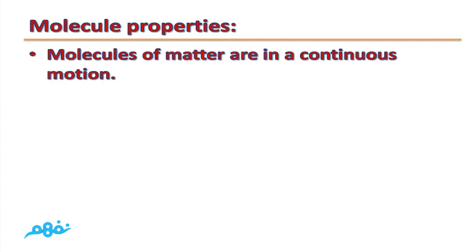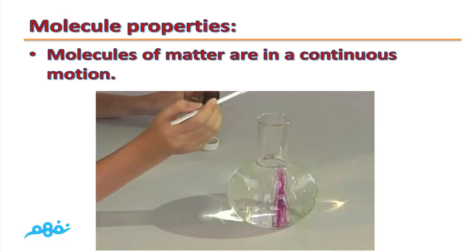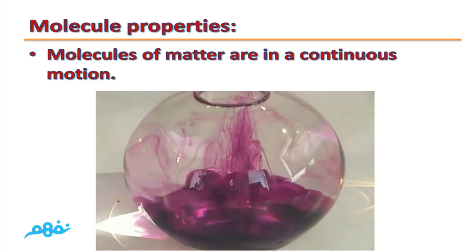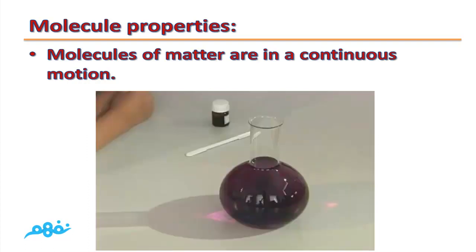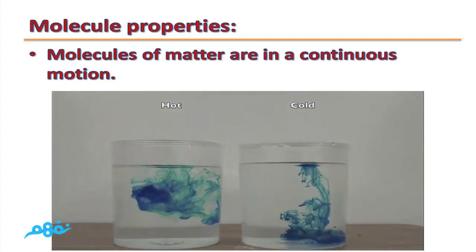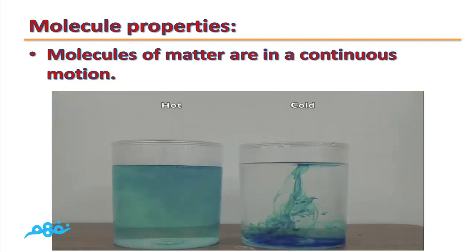Let's do some experiments to prove that molecules of matter are in a continuous motion. If we put a small amount of potassium permanganate, which has violet color, in a container that contains water, we will see that its color will spread all over the water until the color of water changes into violet. The same is done if we add two or three drops of ink in hot and cold water. The only difference is that ink will spread faster in hot water, because molecules of hot water have higher energy, so they will move faster.